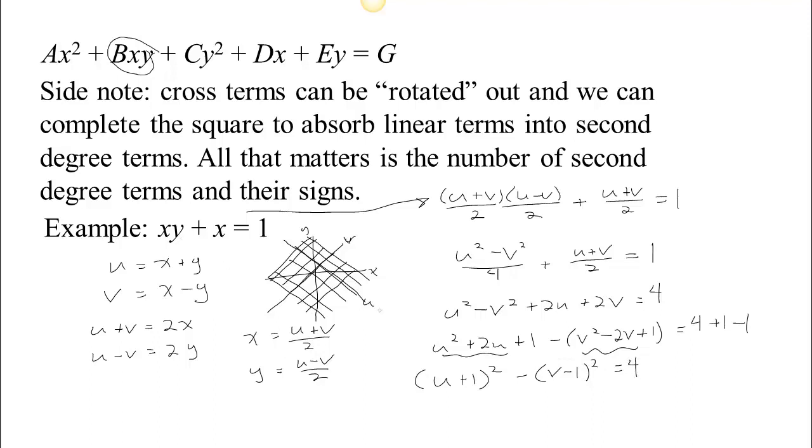So this is what I'm saying. I don't expect you to be able to rotate these, but to realize if we're just considering what are the possibilities, we could always rotate out any cross term. And then if we have a quadratic term to match, then we could always complete the square to absorb that. So for example, we had this x here, but after we rotated, we had a 2u and a 2v. Those are linear terms, but each one had a corresponding quadratic term, and so we could complete the square in order to absorb those into the squared term.